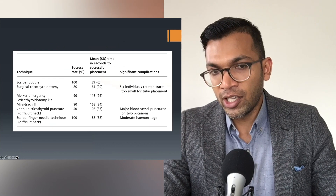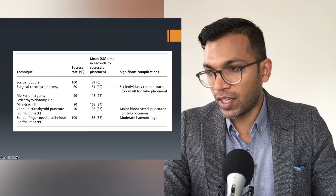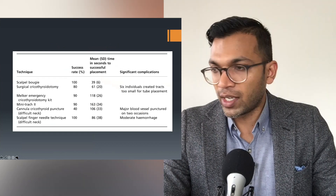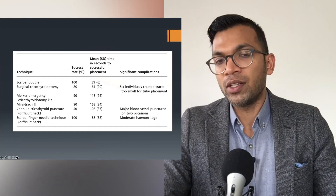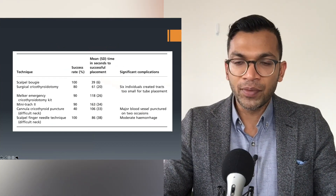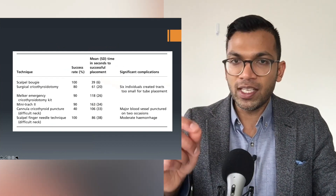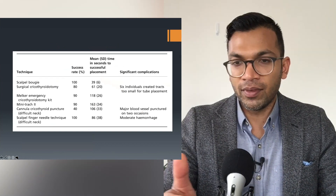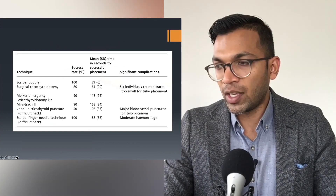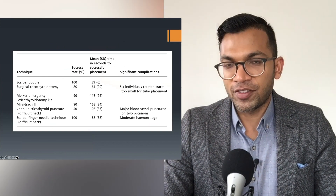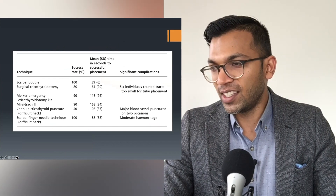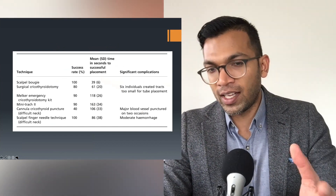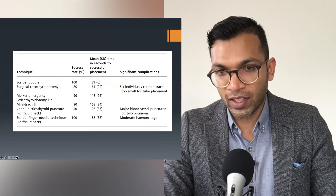The NAP4 - the National Audit Project from the UK - showed that scalpel-bougie had zero failures, so a 100% success rate. While the needle crike technique had some failures, the reason we still teach needle crike is because anesthetists are thought to be far more familiar with needles than with scalpels. But overall, it's far easier to explain scalpel-bougie technique than needle crike from a practical point of view, and it has good data suggesting very low failure rates.